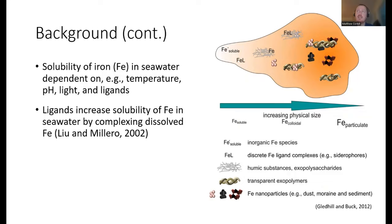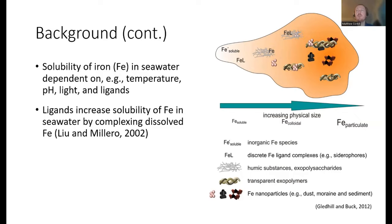This increase in solubility has been shown experimentally by spiking two solutions — natural seawater with ligands and artificial seawater — with iron, letting them equilibrate, allowing some iron to precipitate, and measuring dissolved iron. Natural seawater with ligands kept more iron in solution. What is uncommon are experiments that directly look at dissolution of natural particles using seawater as a leaching solution, because ligands in seawater vary greatly by source, making comparisons difficult.